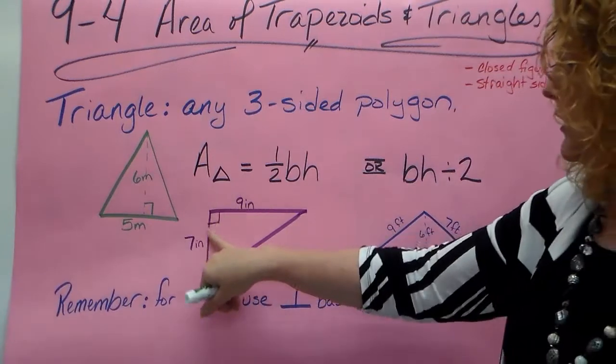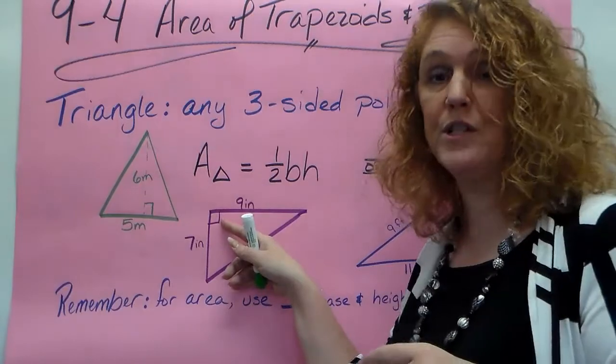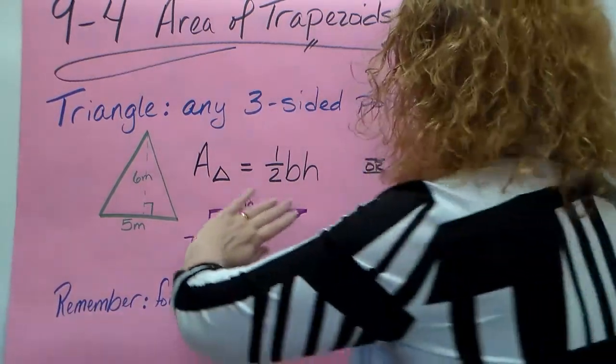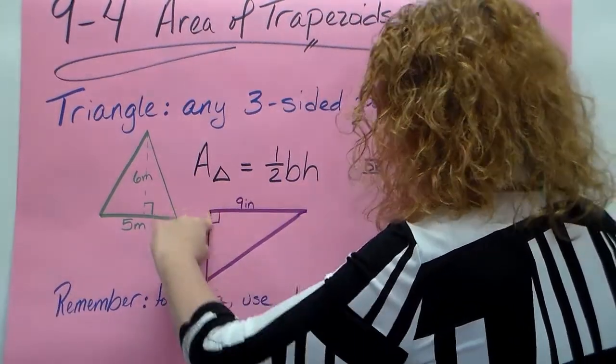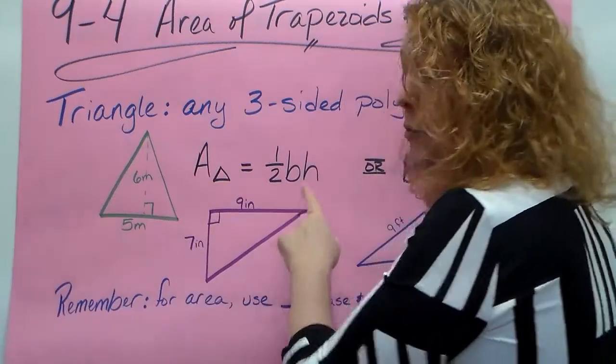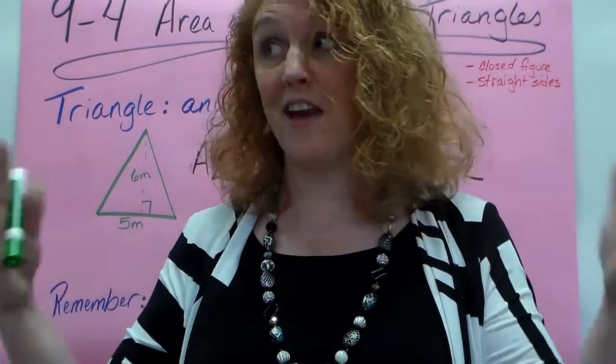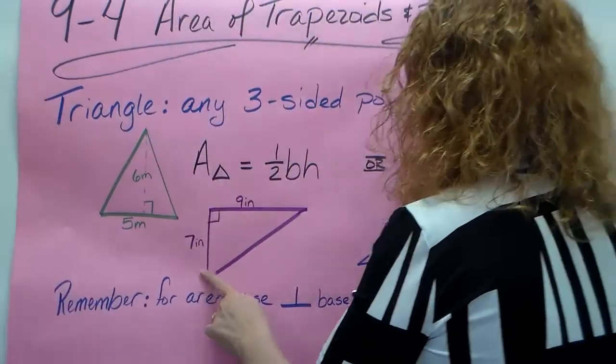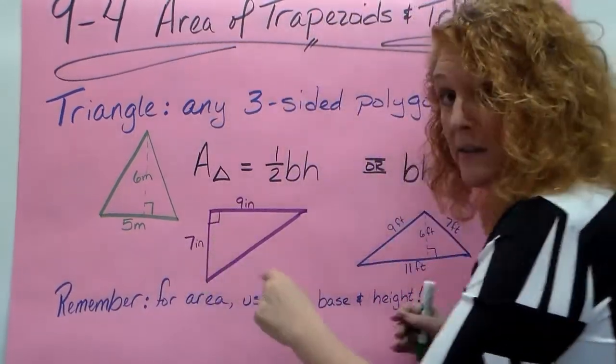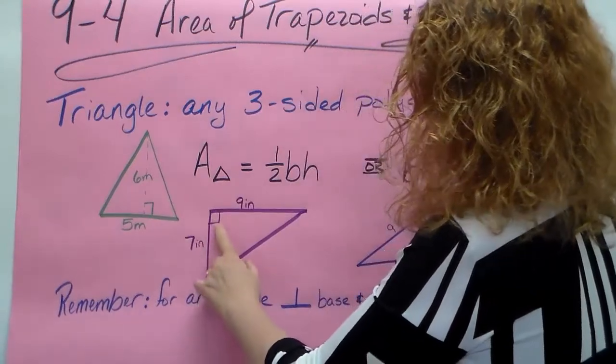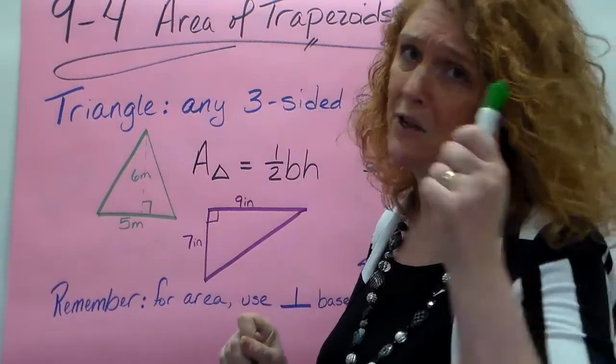Sometimes you're going to see triangles that look like this. These are called right triangles because one of their corners is a right angle. Now what I need you to understand is if I turn this sideways, then my height is 9 inches and my base is 7 inches because these are perpendicular to each other. With right triangles they don't give you the dotted line because they give you one of the legs, the two lines that make the 90 degree angle. Those are called legs as opposed to the hypotenuse which we will get to later.